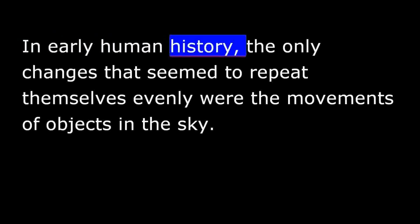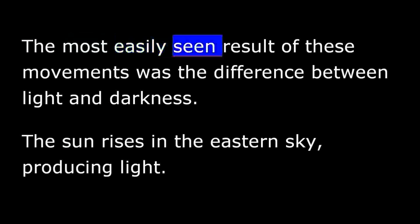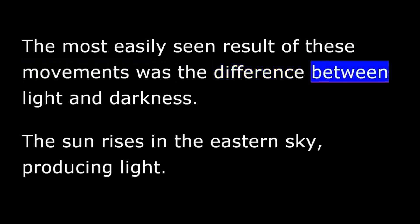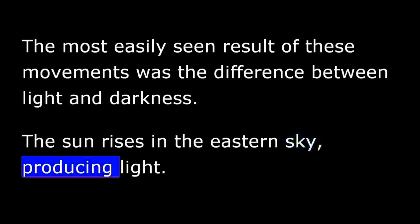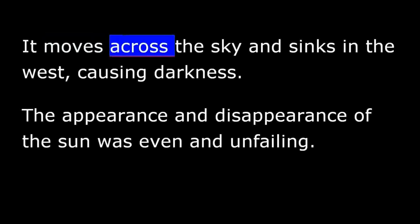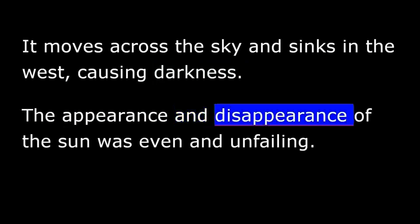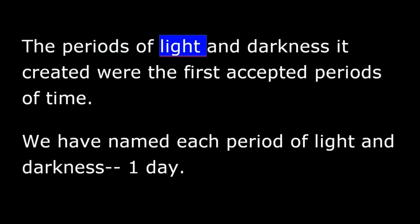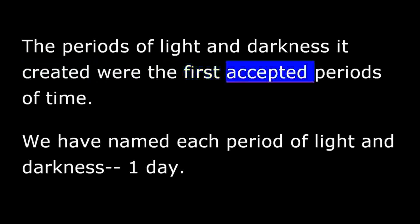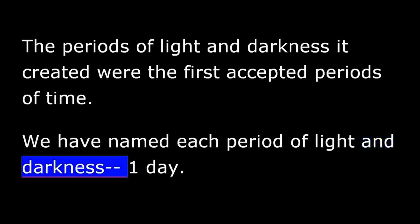In early human history, the only changes that seemed to repeat themselves evenly were the movements of objects in the sky. The most easily seen result of these movements was the difference between light and darkness. The sun rises in the eastern sky, producing light. It moves across the sky and sinks in the west, causing darkness. The appearance and disappearance of the sun was even and unfailing. The periods of light and darkness it created were the first accepted periods of time. We have named each period of light and darkness one day.